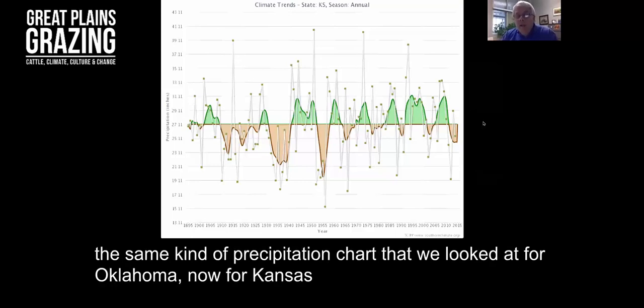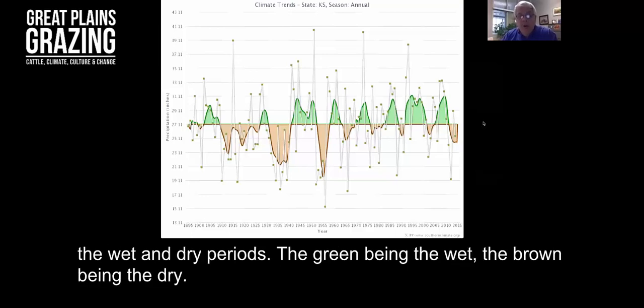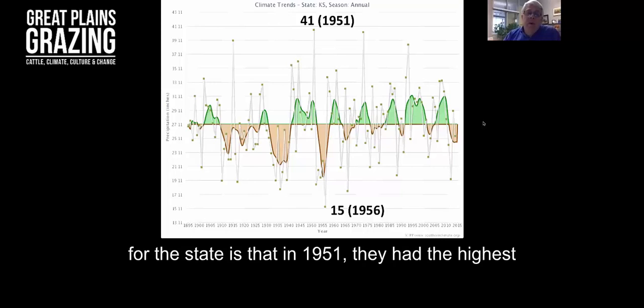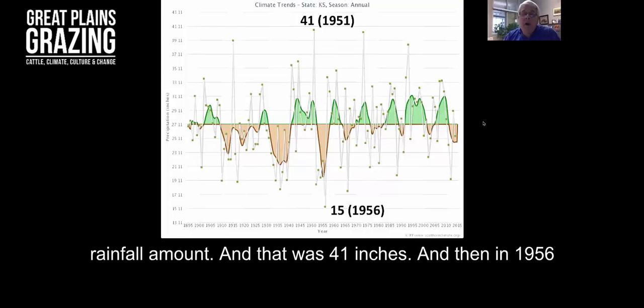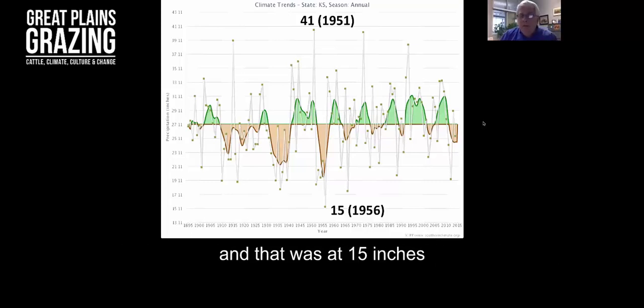This is the same kind of precipitation chart that we looked at for Oklahoma, now for Kansas, with the annual amounts, the little green squares, and then we can see the wet and dry periods. The green being the wet, the brown being the dry from that five-year running average. One of the things that we see for the state is that in 1951 they had the highest rainfall amount, and that was 41 inches. In 1956 they had one of the driest years for this 1895 to 2014 period, and that was at 15 inches.